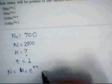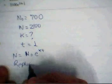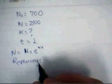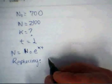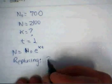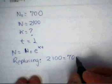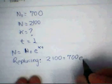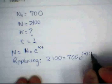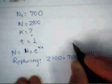And replacing, we obtain that 2100 equals 700 e to the k times 1. Y1—1 corresponds to the time.